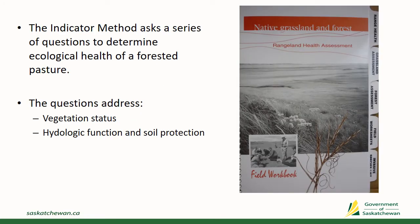The Indicator Method asks a series of questions to determine the ecological health of a forested pasture. The questions address the vegetation status of the site, and also the hydrologic function and soil protection status of the site. The details for this assessment method are provided in the Native Grassland and Forest Range Health Assessment Field Workbook, and you see a picture of it there on the screen.